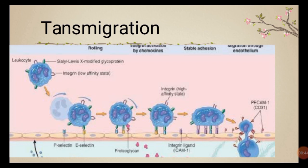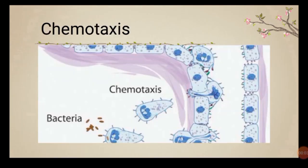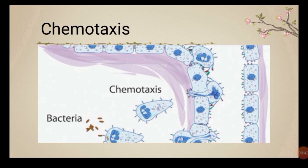After transmigration, collagenase enzyme is released, which digests the basement membrane so the leukocyte can pass through easily. The next step is chemotaxis — leukocytes migrate toward the site of a foreign particle or injurious material. Chemoattractants include bacterial products like N-formyl-methionine peptides, cytokines, lipopolysaccharide products, and leukotrienes, which help leukocytes reach the site of injury.